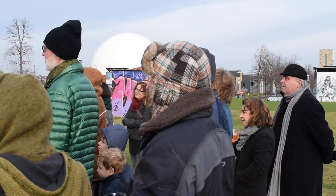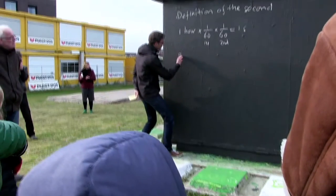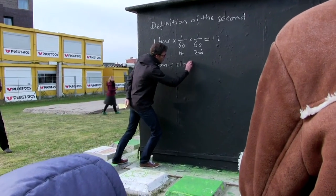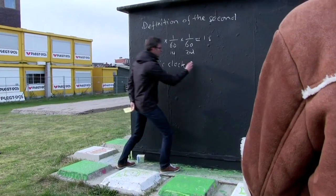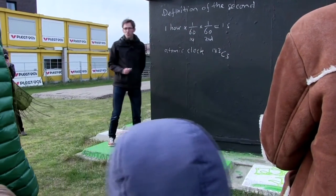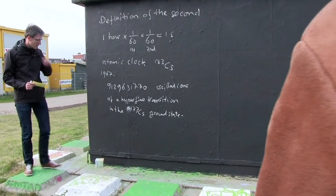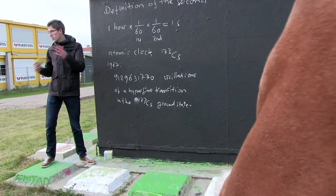For a long time we have defined time based on the motion of the earth and the Sun. At the moment, the second is defined using an atomic clock using an atom, 133 cesium. So the assumption is that the cesium atom, as any other atom, is actually not changing in time.